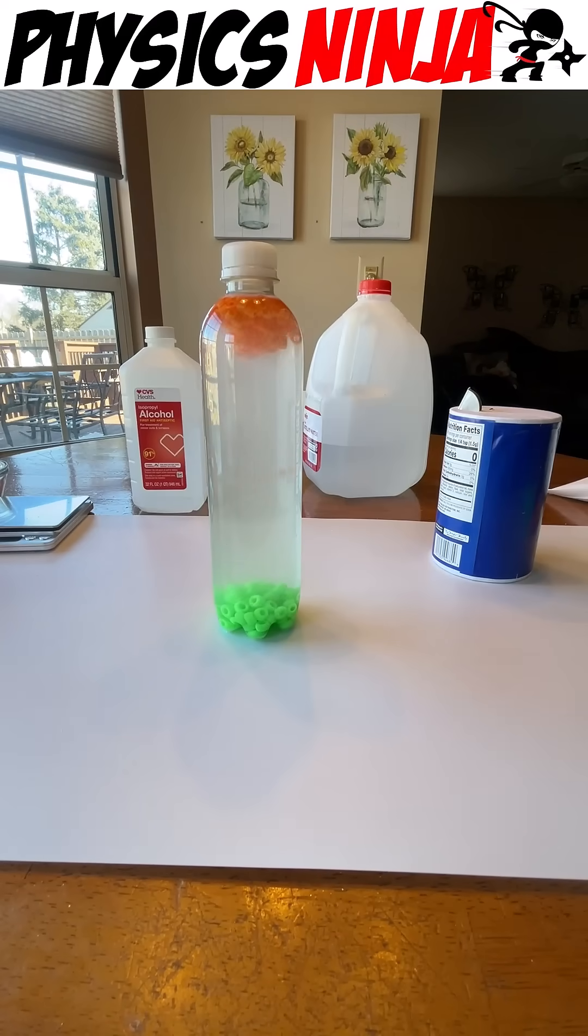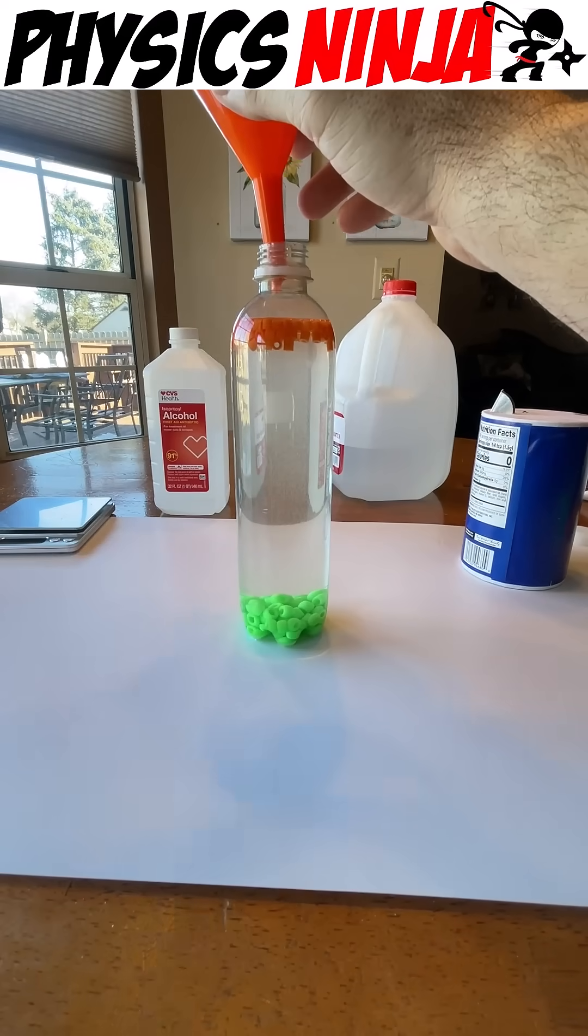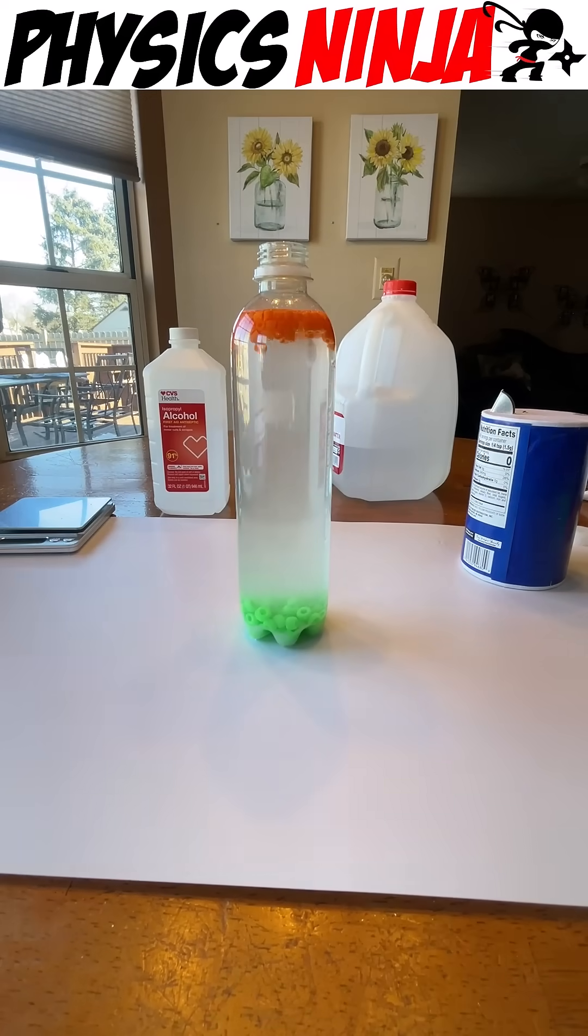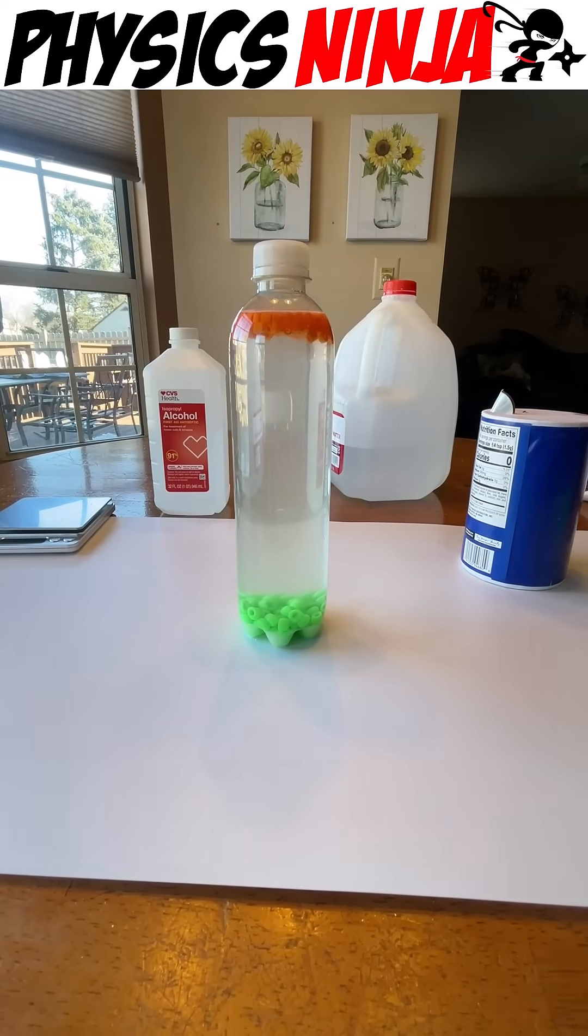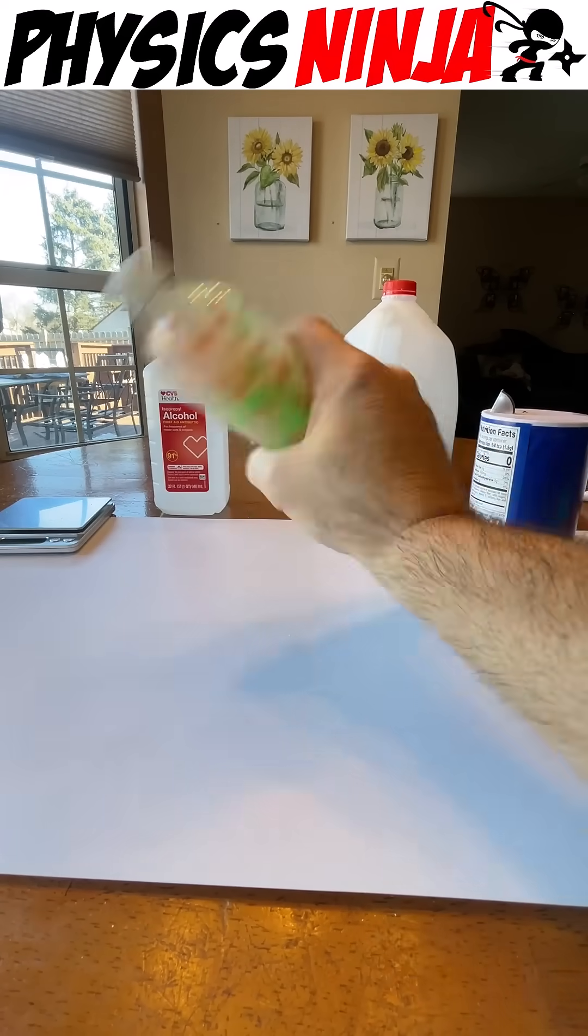Once you let it settle, the Perler beads float to the top and our pony beads are still resting at the bottom. It's now time to add the remainder of the salt to the bottle. Again put the salt in, close it up, and give it a good shake.